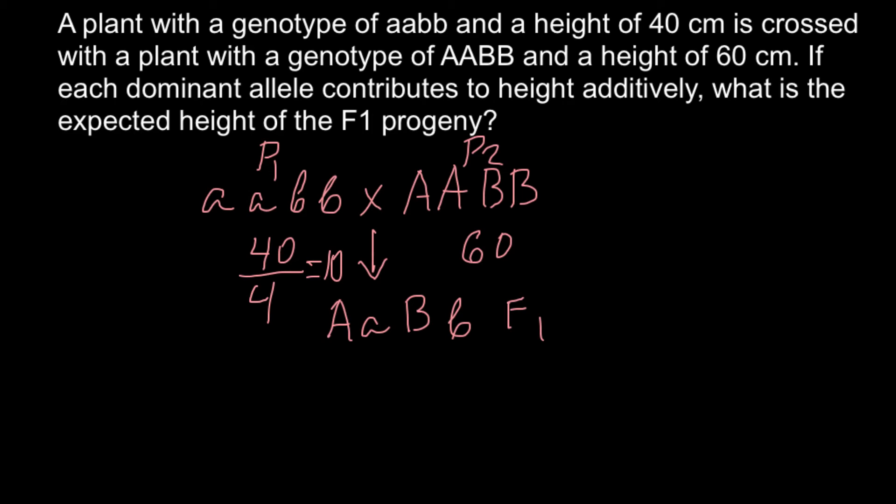So this is going to be 10 cm for one allele, 10 cm here, here and here. Altogether this is 40 cm. For parent 2, we have to divide 60 cm by 4 alleles and we get 15 cm. So each dominant allele would add 15 cm for that trait. Altogether, 4 alleles would produce plant with height of 60 cm.